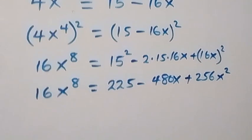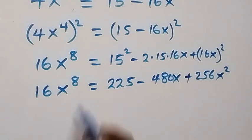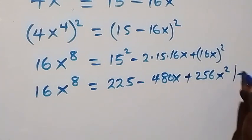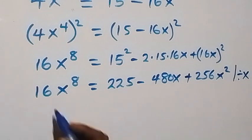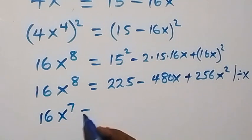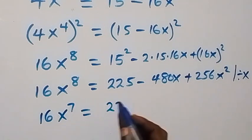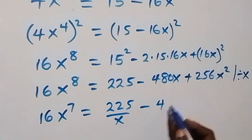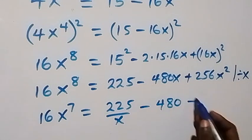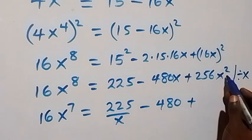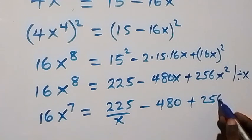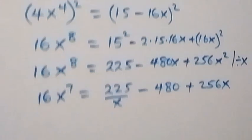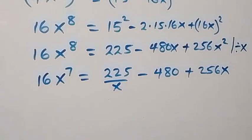Since we are interested in finding x⁷, we divide everything by x. So 16x⁸ ÷ x gives 16x⁷, and the right side becomes 225/x - 480 + 256x.